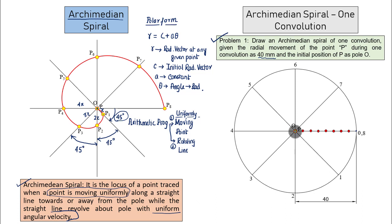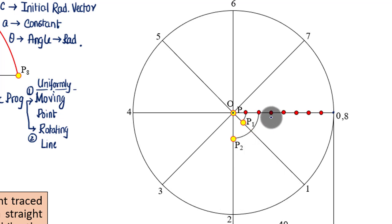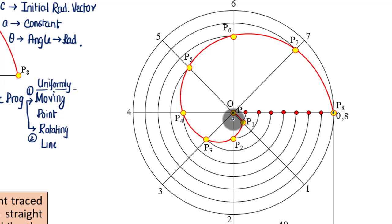Now, keep the steel end of your compass at O and the pencil end on the first red dot; rotate it clockwise until you reach link O1 — that is position P1. Keep one leg at the pole, other leg on the second red dot, rotate clockwise to intersect O2 — that is P2. Do the same for P3 through P7. The eighth red dot by default ends here as P8. When you join all these points in proper sequence with a smooth curve, you get a spiral of one convolution.